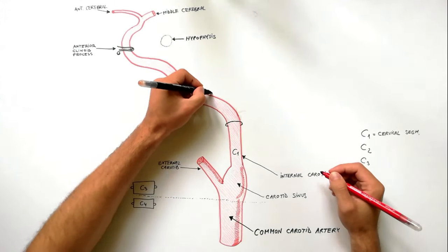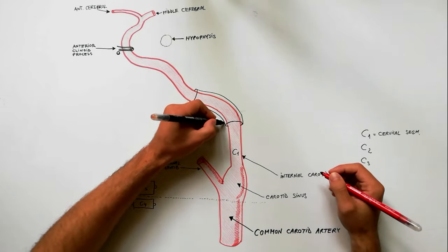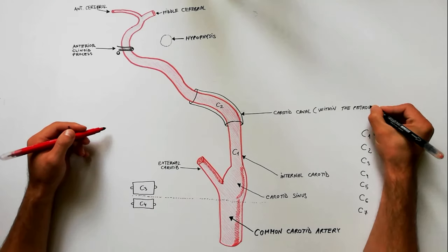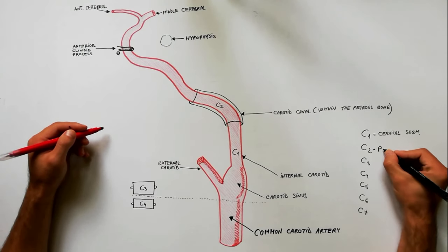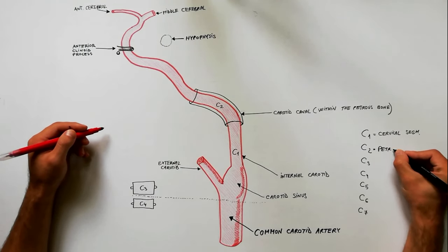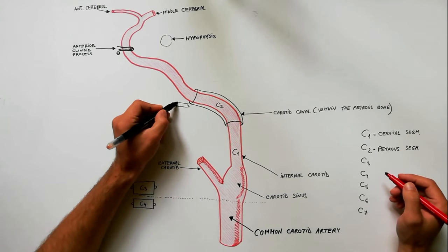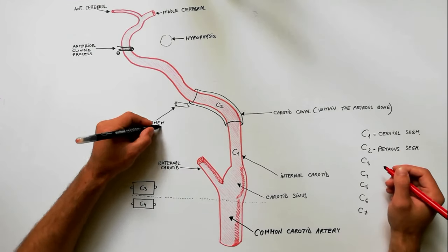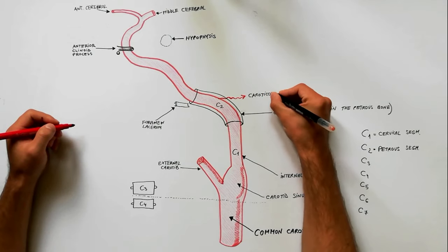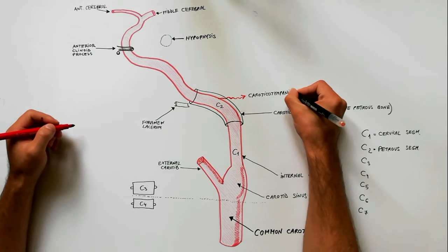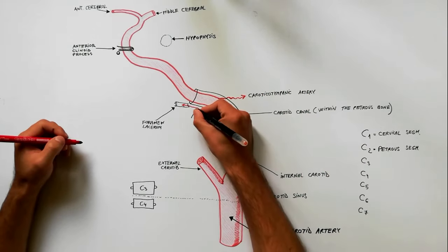The C2 segment, or the petrous segment, is that which is inside the petrous part of the temporal bone. This segment extends until the foramen lacerum. It has two branches: the caroticotympanic artery and the vidian artery.